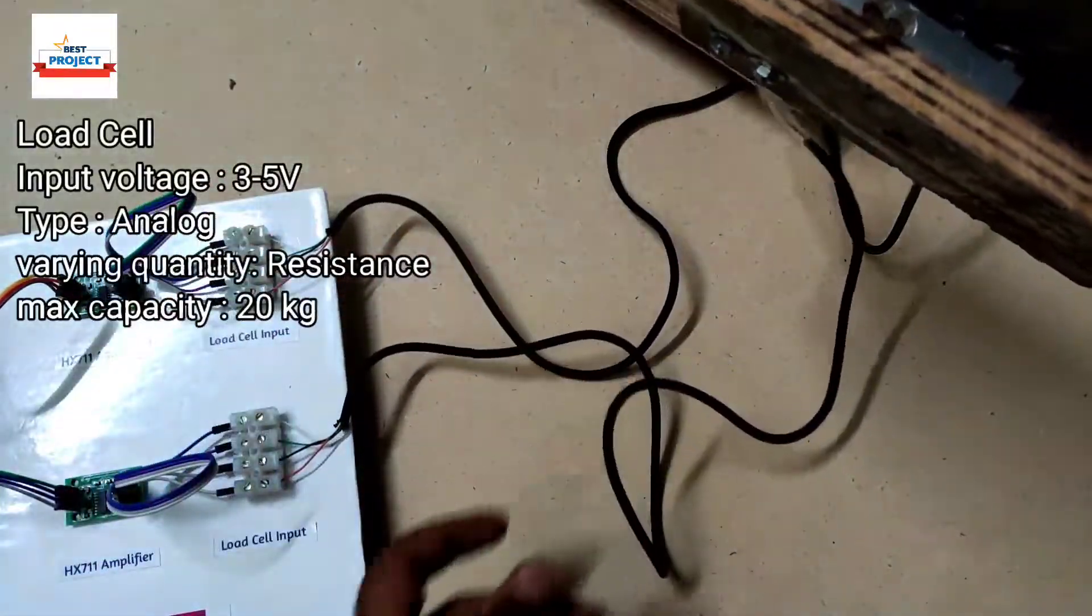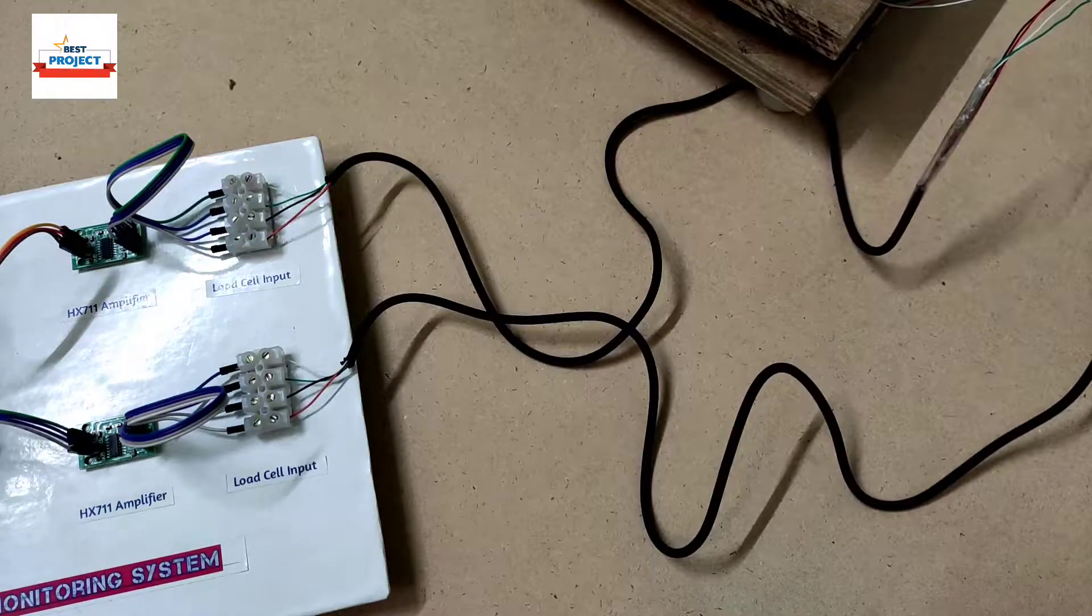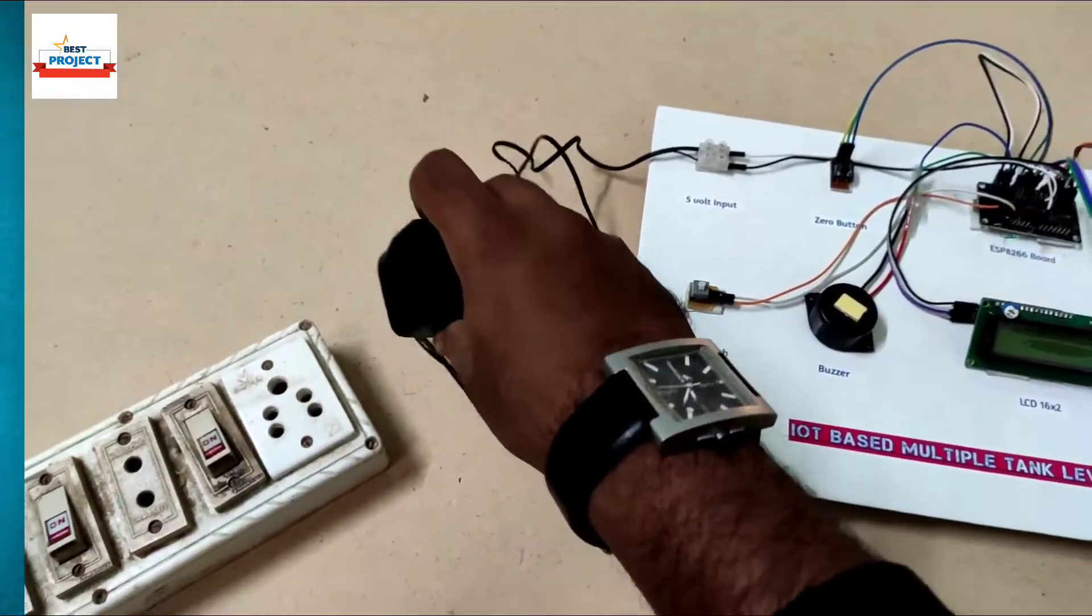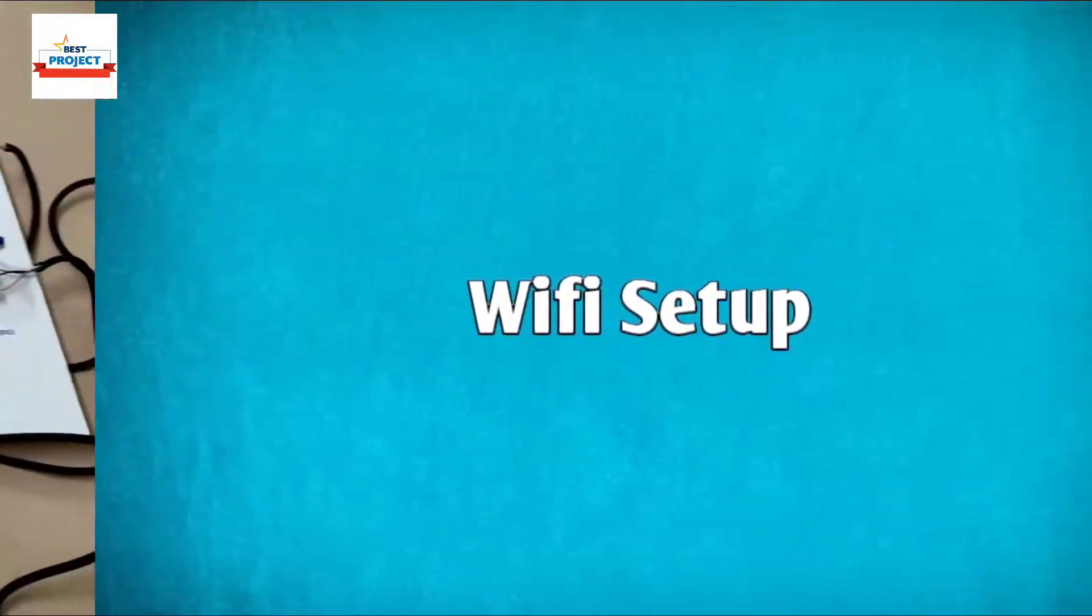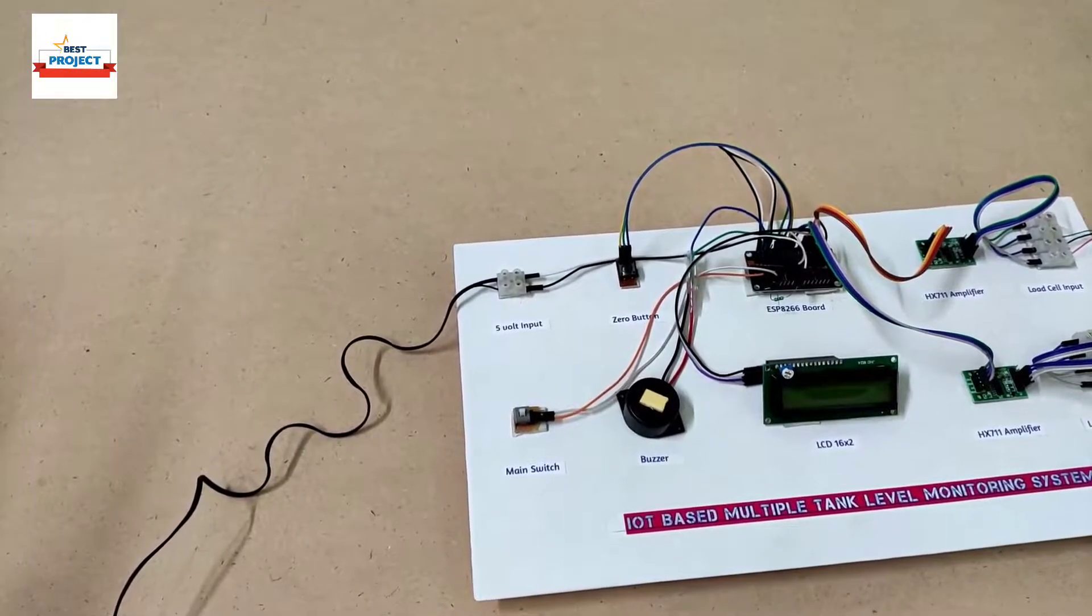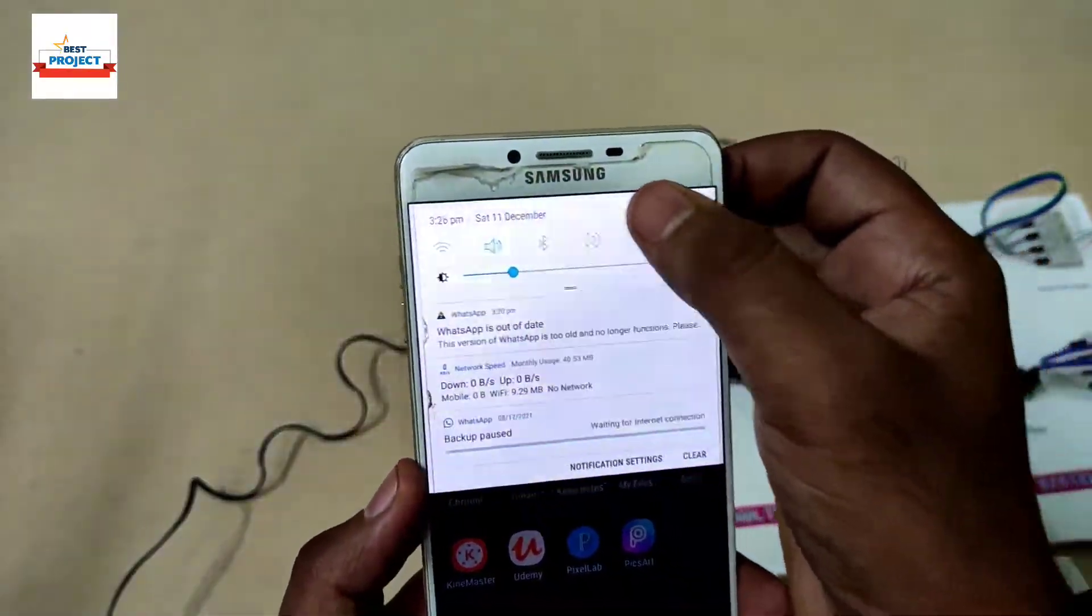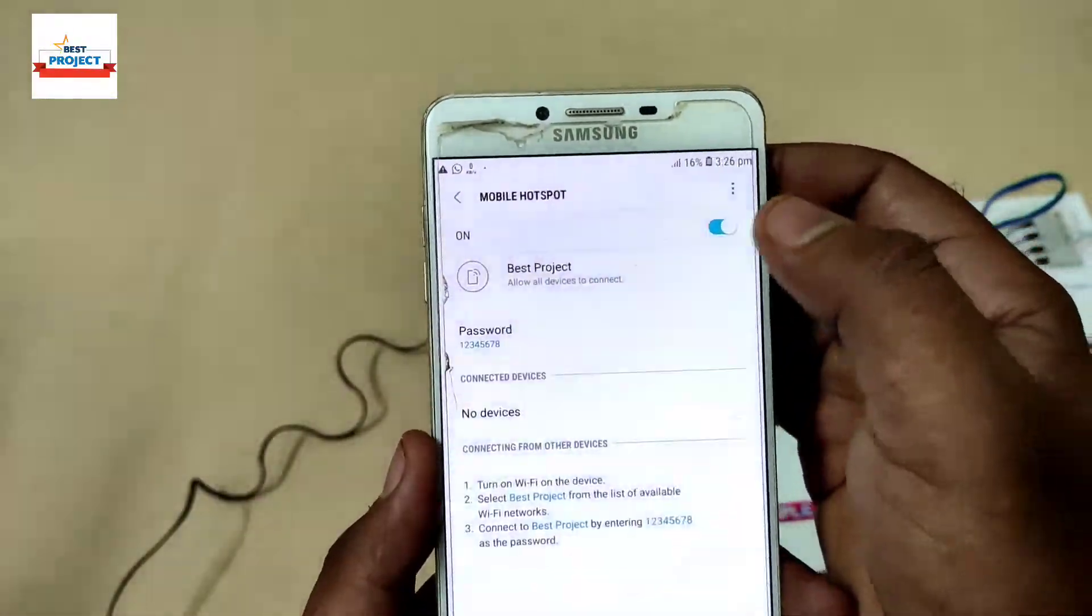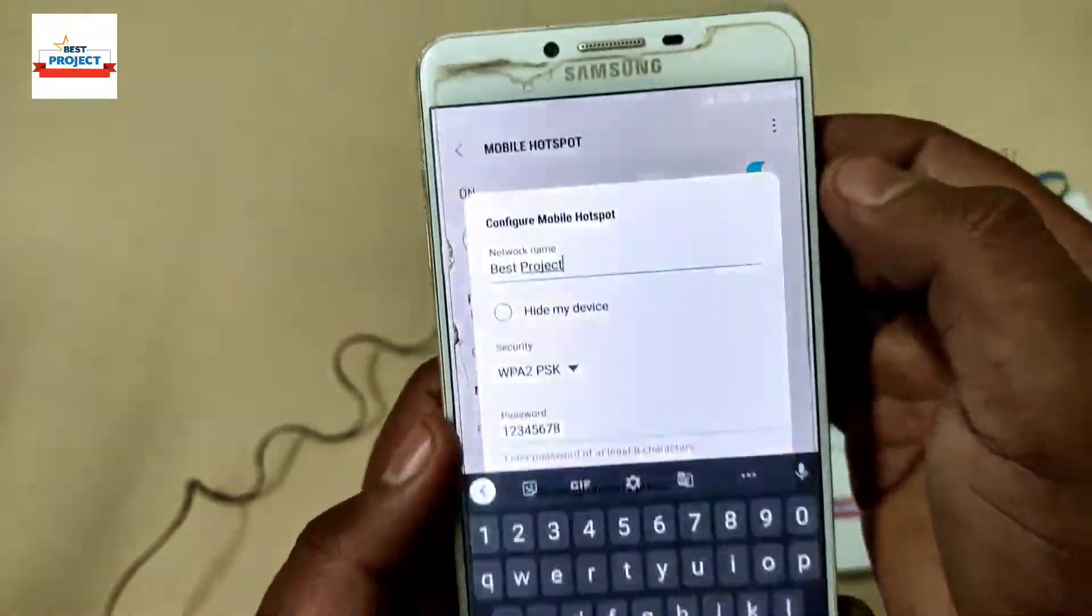Let's provide power supply for the operation of the model. We're connecting to a 230 volt power supply. After power supply, we need to connect our model to Wi-Fi. For this, we'll use our mobile phone hotspot, though you can use any device like a Wi-Fi router or mobile hotspot.